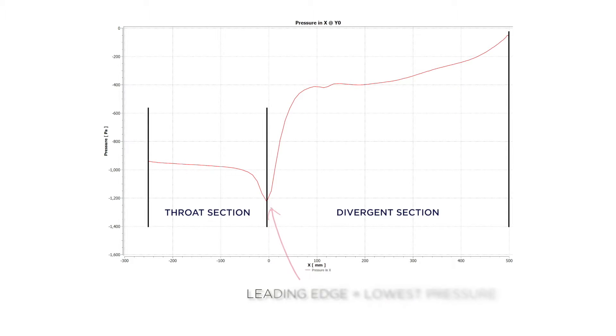In that process, a low pressure is generated and the car is effectively sucked down to the floor. A common misconception about diffusers is that the low pressure is generated in the actual divergent section, but that's not the case. The lowest pressure in a diffuser is actually at the leading edge, just where the radius starts to go into the divergent section. The goal of the diffuser is to lower the pressure on the upstream flat underside of the car.